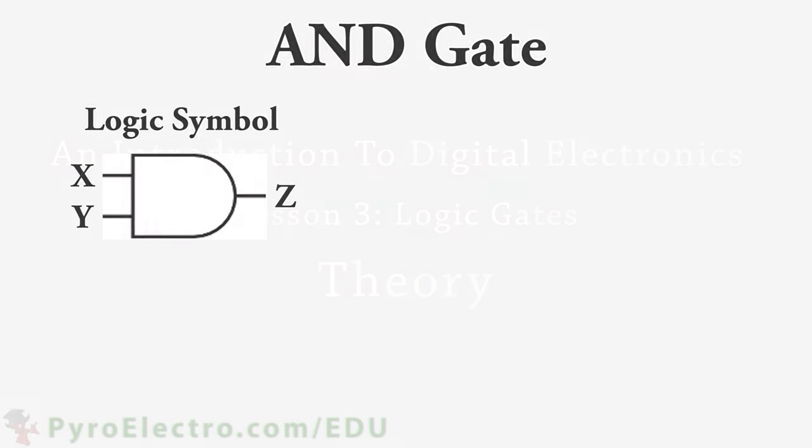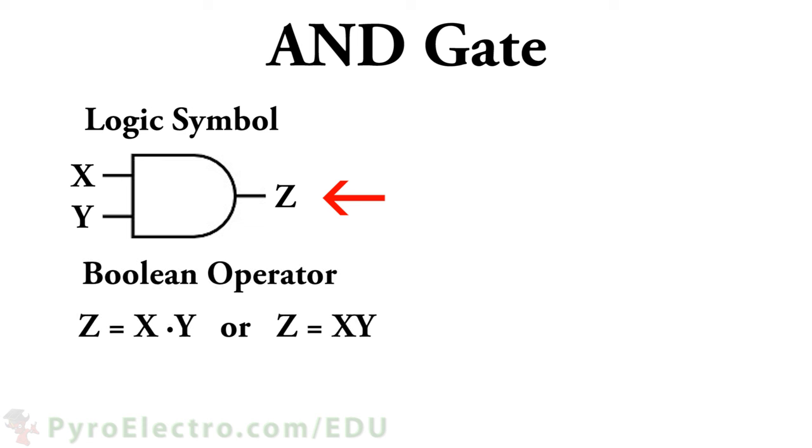The first Boolean expression and logic gate that we'll look at is called the AND gate. Graphically, it looks like this symbol, and algebraically, it is represented by this dot. But like multiplication, you can actually just have the two input symbols X and Y together, and it means that they should be ANDed together.